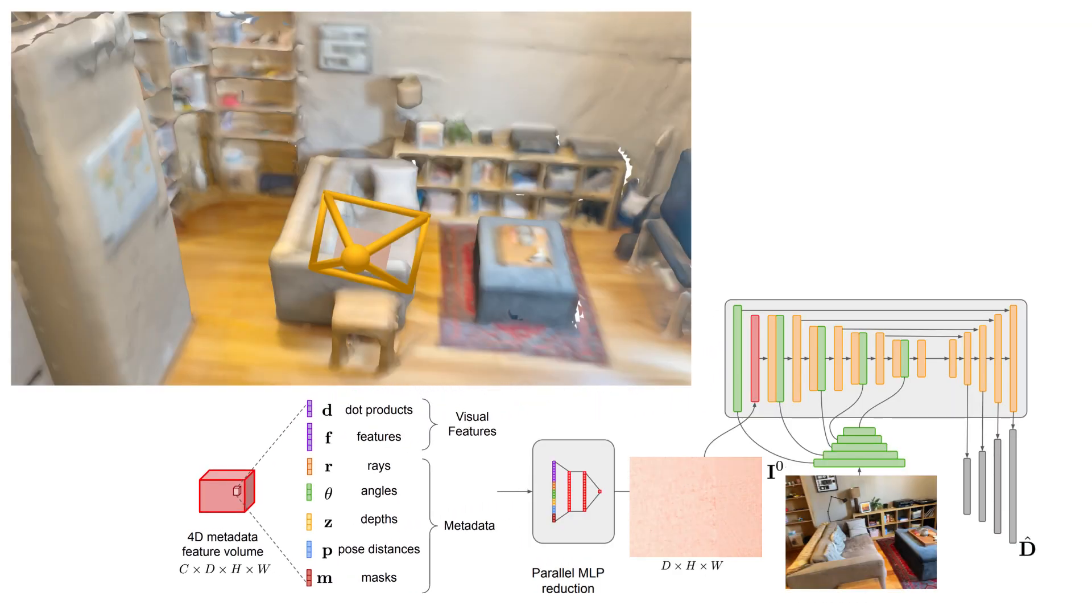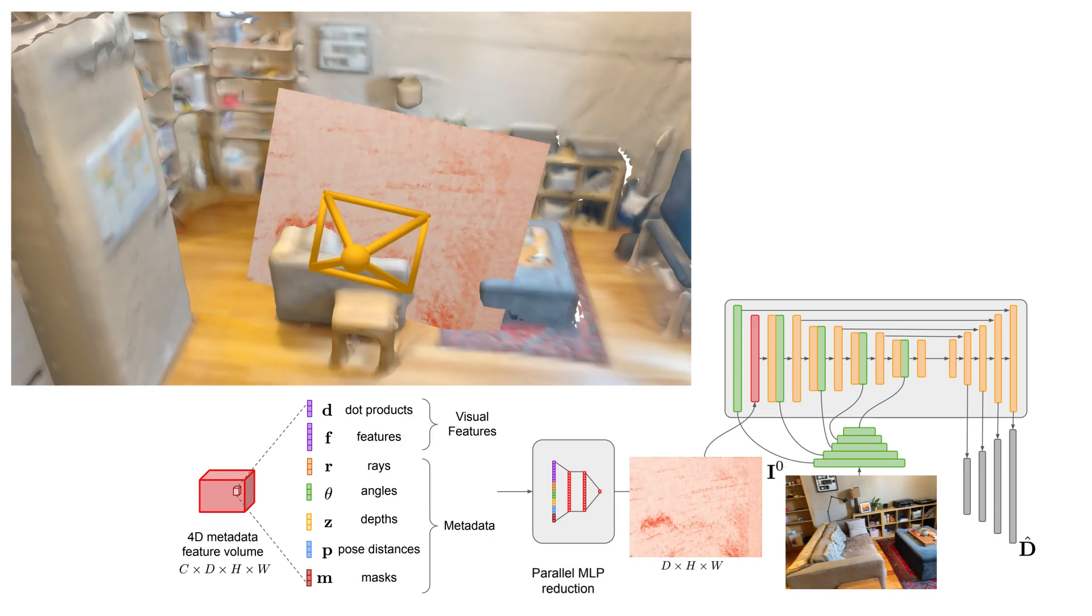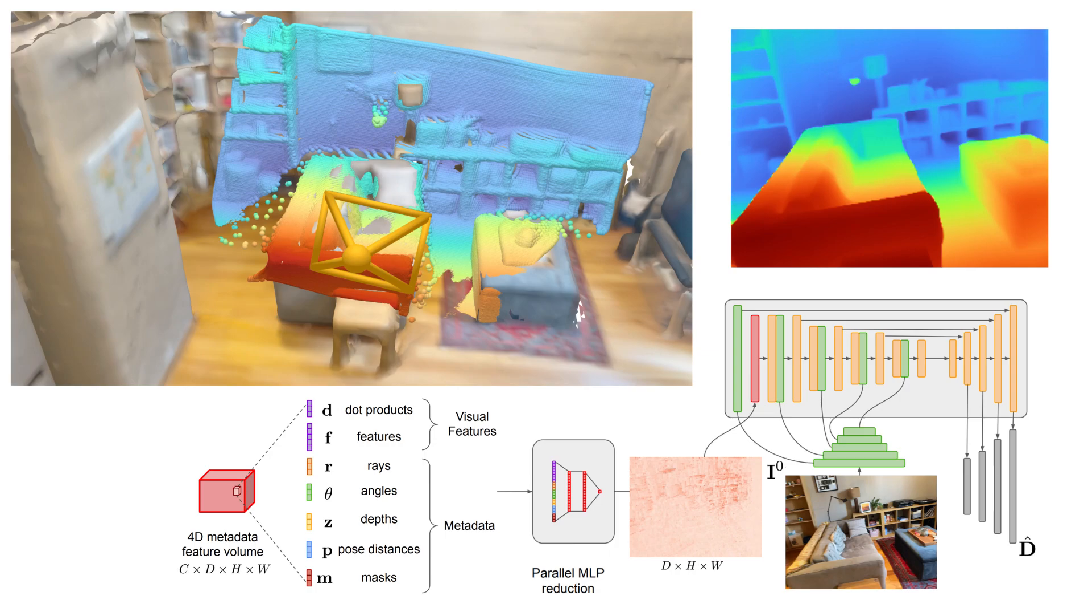We use an MLP to score each element in the cost volume, given its visual features and metadata. In this way, instead of using complex heuristics, we opt to have the network learn from the data on how best to score the cost volume elements given this extra information.